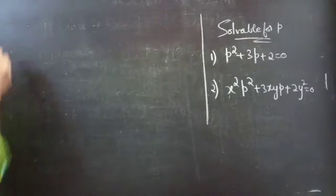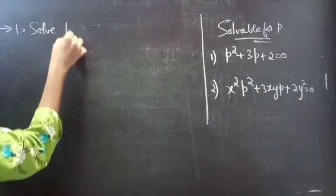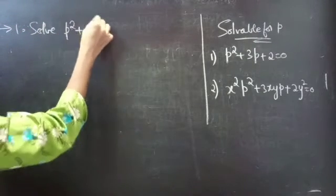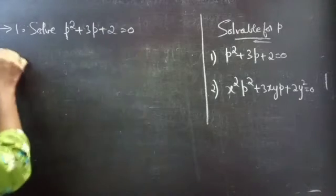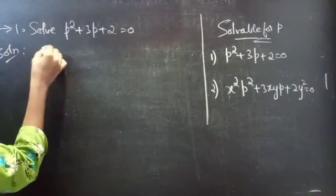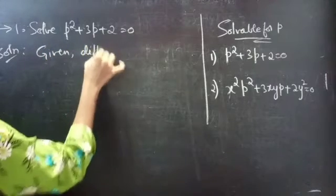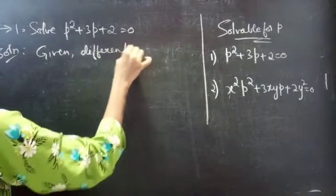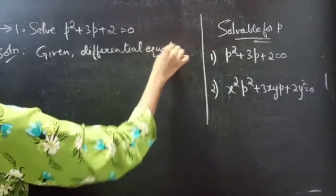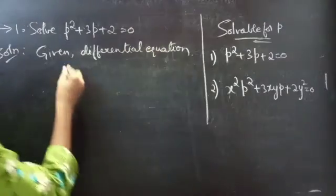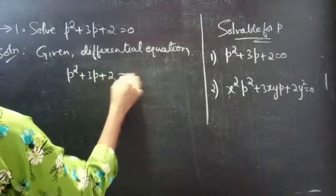Problem one: Solve P squared plus 3P plus 2 equals to 0. We are given the differential equation P squared plus 3P plus 2 equals to 0.